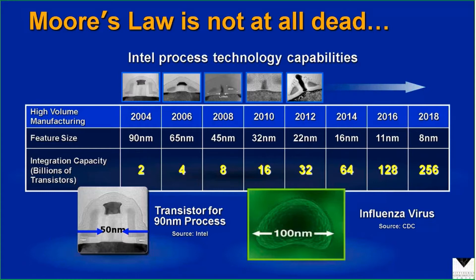He predicted this was going to continue to happen for a while — that we'd be able to cram twice as many transistors in any given area of our chip. And amazingly, it has held true now for 40- or 50-some years. If we look at a slide from Intel, we can see we've continued all the way through the past couple of years cranking out more and more transistors at an incredible pace. So Moore's Law isn't dead.